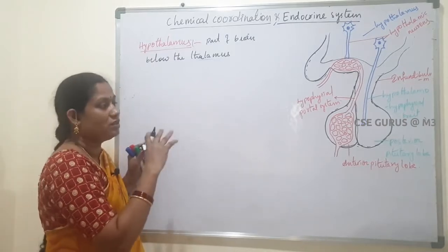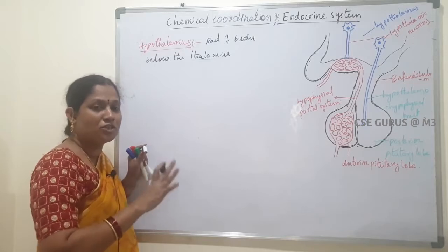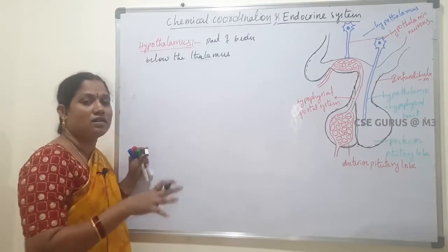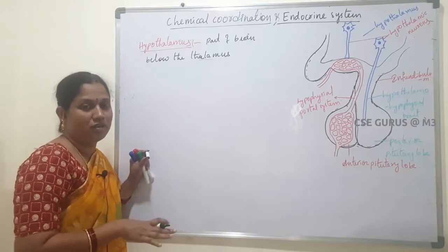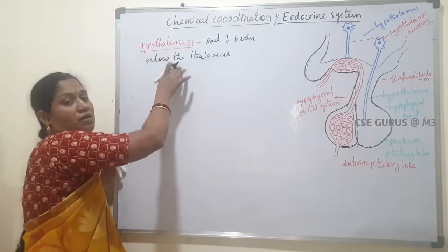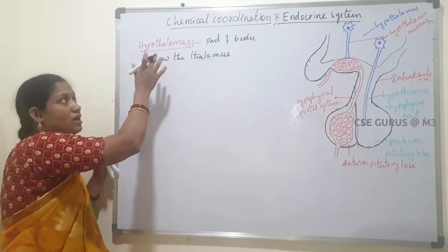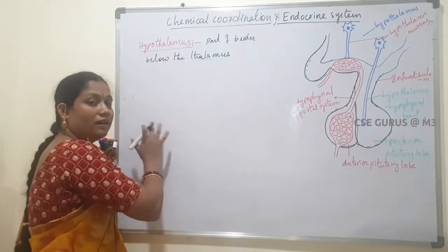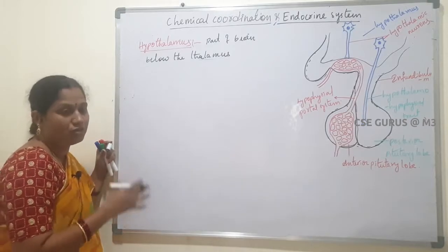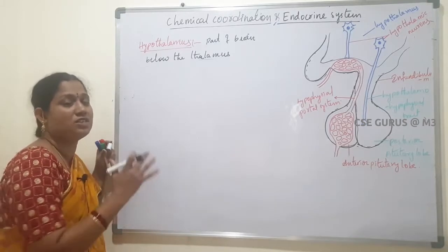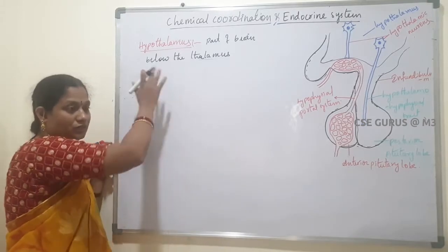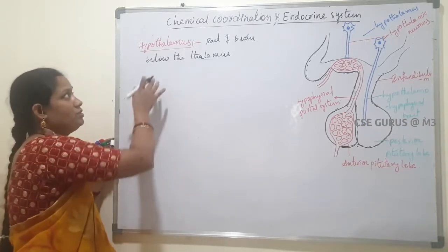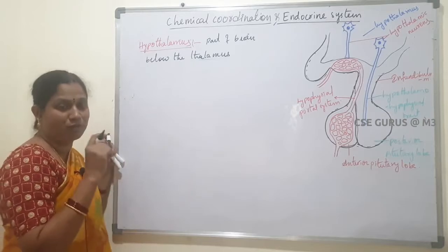In the endocrine system, the pituitary gland is a very important gland. All endocrine glands are controlled by the pituitary gland, and the pituitary gland is controlled by the hypothalamus. So the entire endocrine system is ultimately under the control of hypothalamus. Hypothalamus connects the endocrine system and the nervous system.